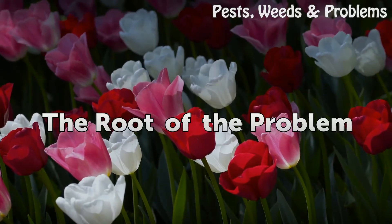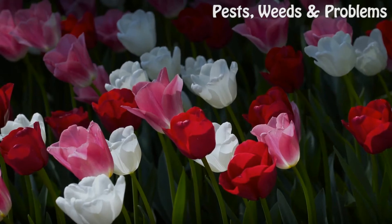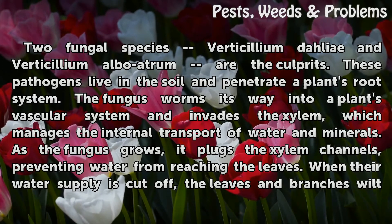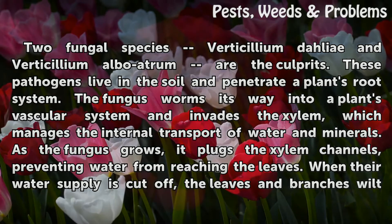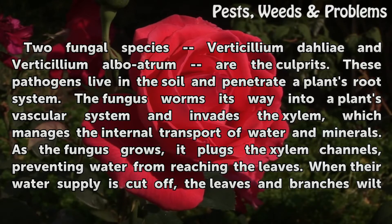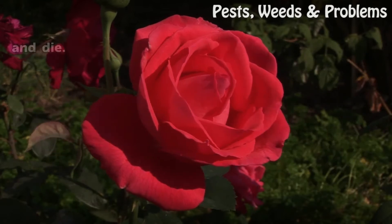The root of the problem. Two fungal species, Verticillium dahliae and Verticillium albo-atrum, are the culprits. These pathogens live in the soil and penetrate a plant's root system. The fungus worms its way into a plant's vascular system and invades the xylem, which manages the internal transport of water and minerals. As the fungus grows, it plugs the xylem channels, preventing water from reaching the leaves. When their water supply is cut off, the leaves and branches wilt and die.